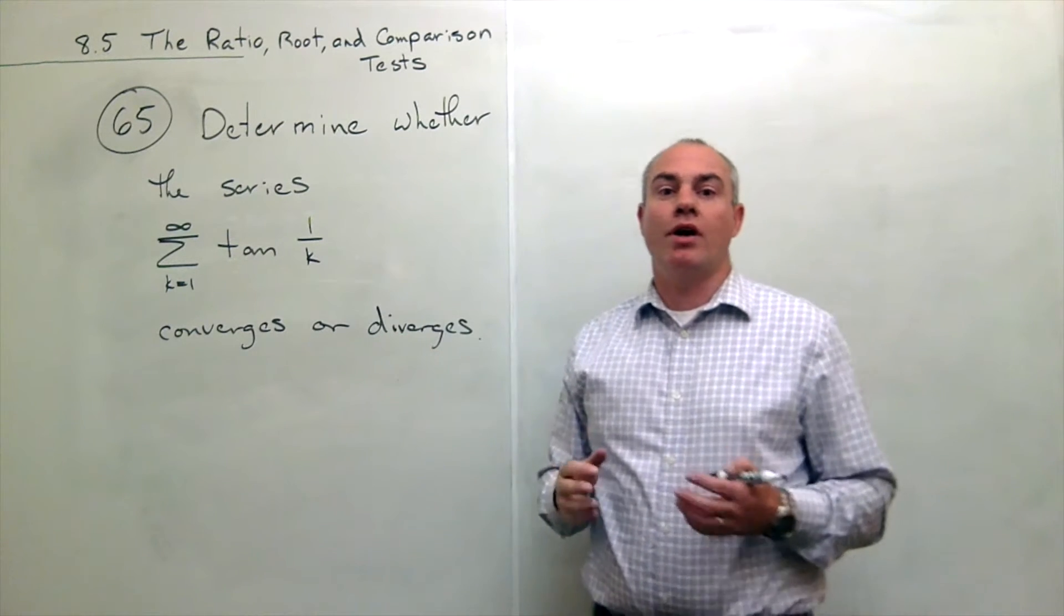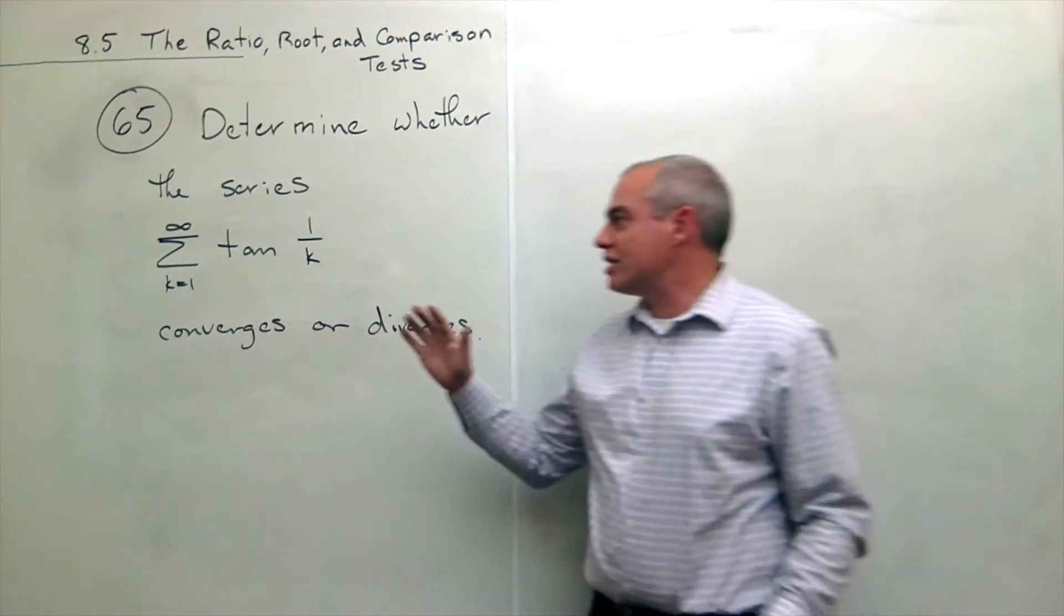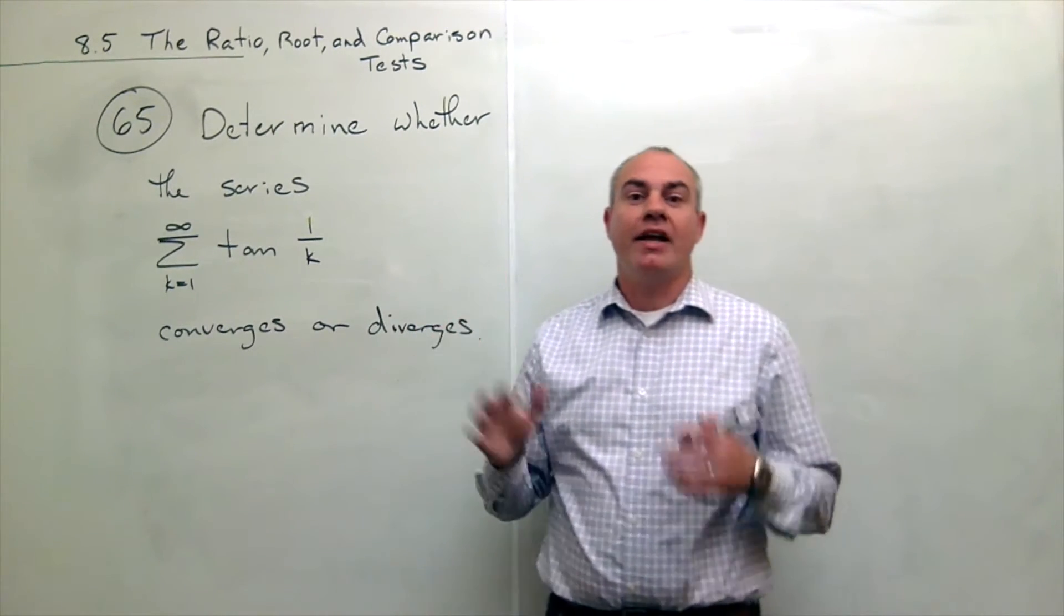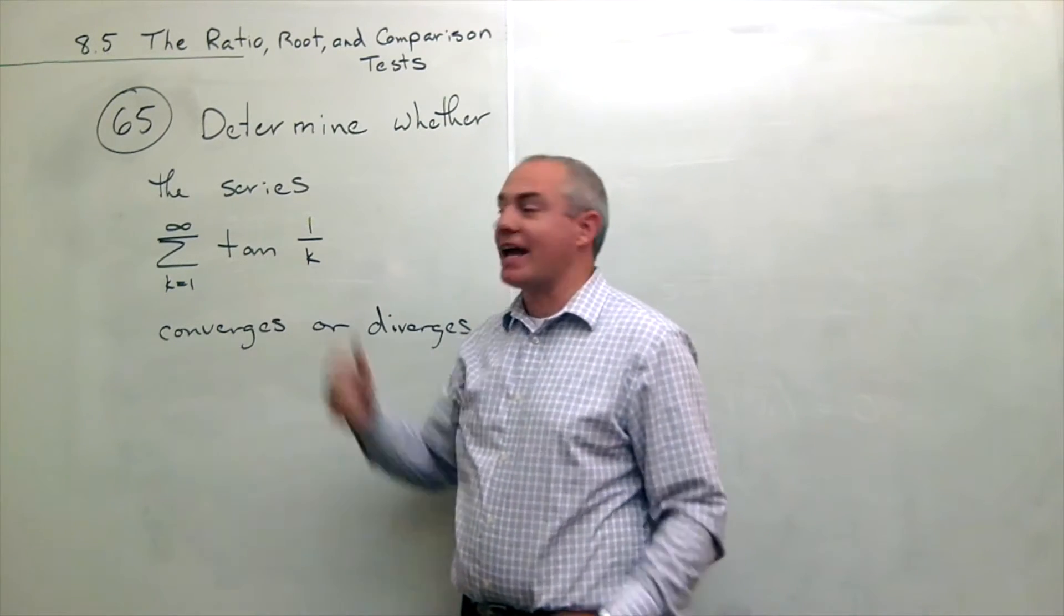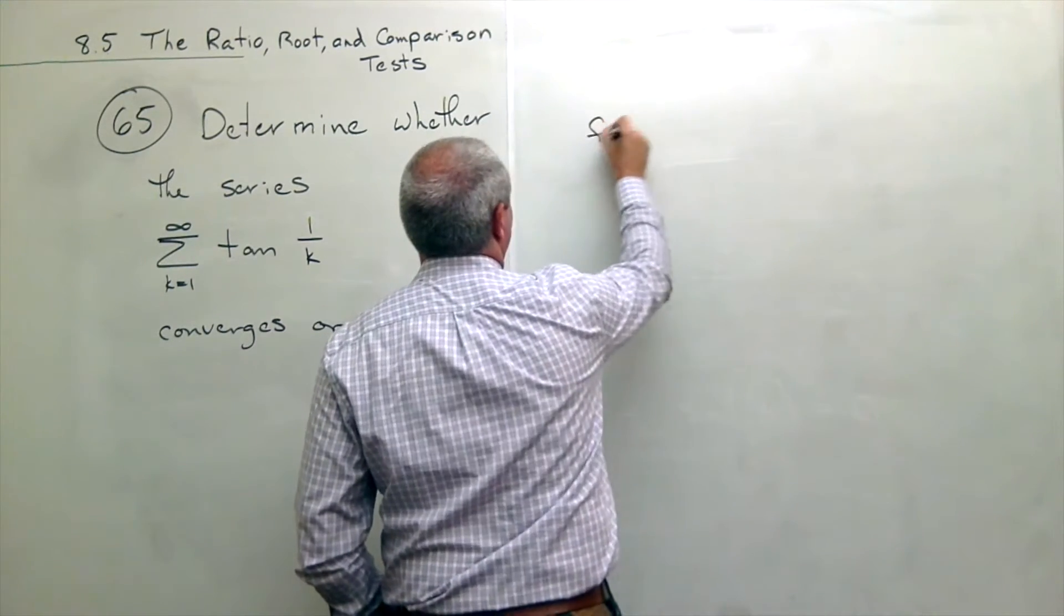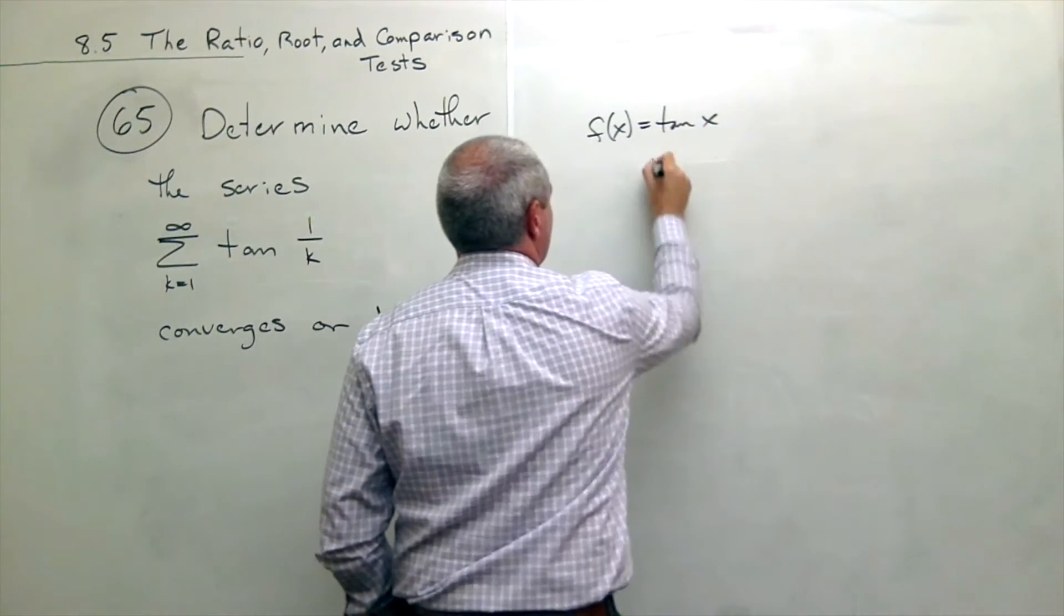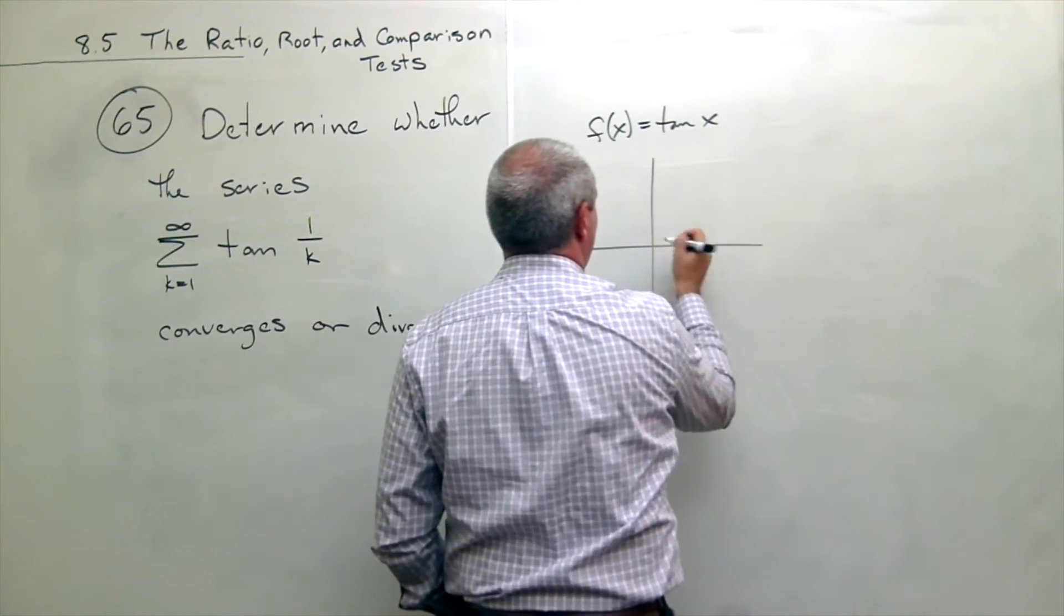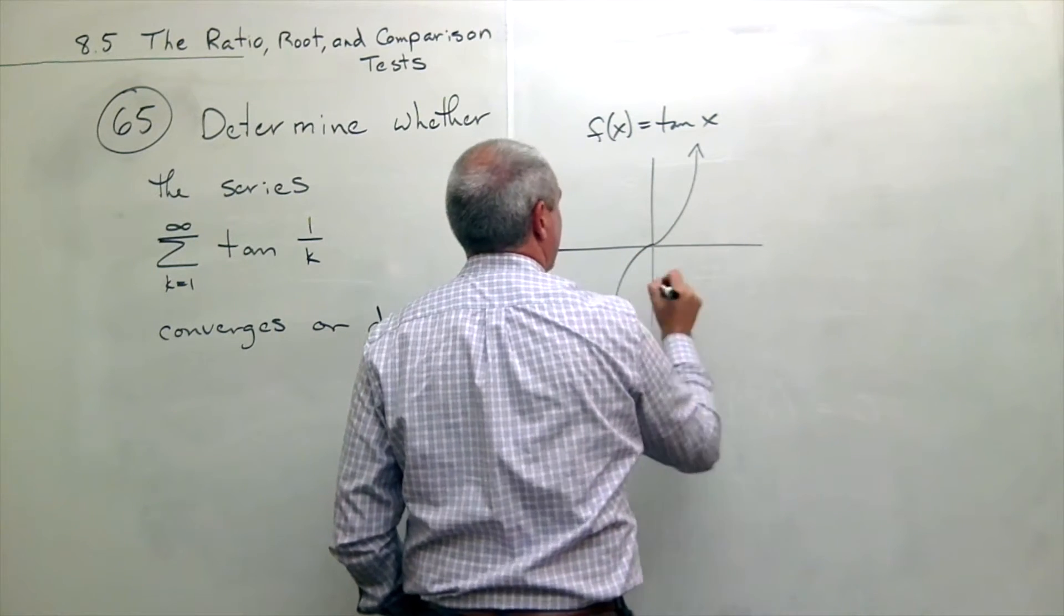So what we want to do here is let's just step back for a second and see what do we know about a curve tangent, let's say, of x. So if I have the function f of x equals tangent of x, what does it look like?